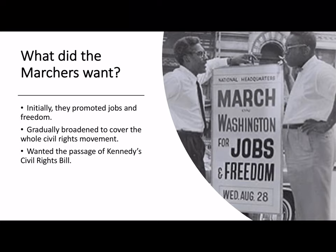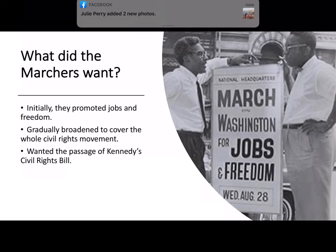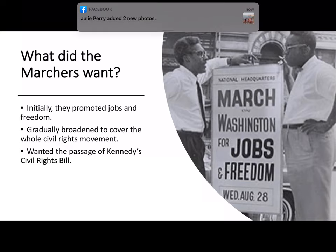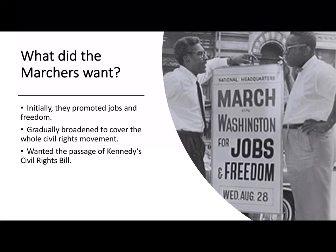So what did the marchers want? Well, initially those on the march were promoting economic issues — jobs as well as their freedom. However, gradually their aims broadened so that it covered the whole civil rights movement. It ended with the demand for the passage of Kennedy's civil rights bill. Bayard Rustin and Cleveland Robinson, two of the organisers of the March on Washington, can be seen in the picture to the right.